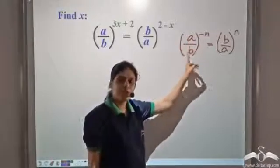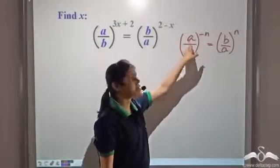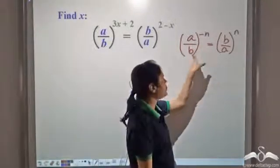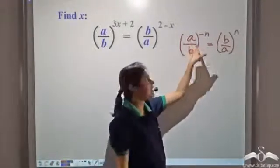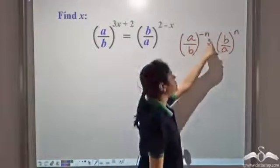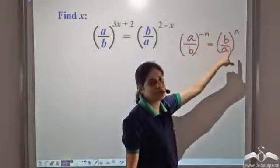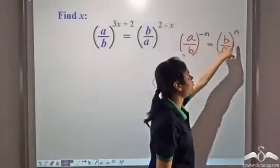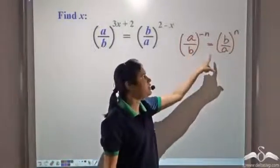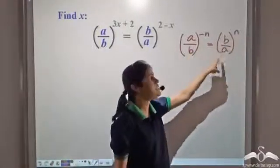If we have an exponential number in which the base is a fraction, then we can find the reciprocal of the base. That is, we can make this a by b as b by a and change the sign of the exponent. So we can change the sign of the exponent from negative n to positive n and take the reciprocal of the base. It remains the same.